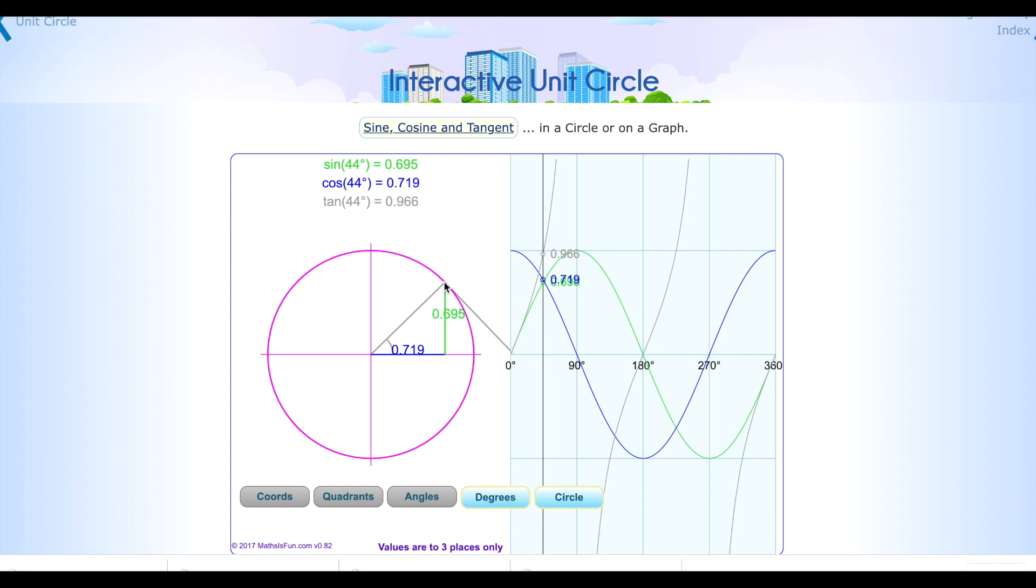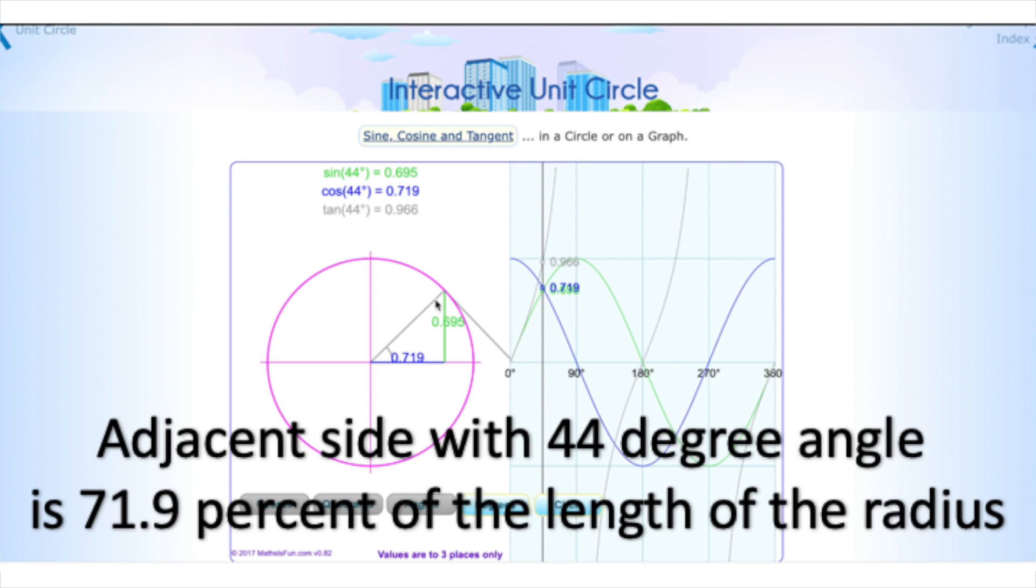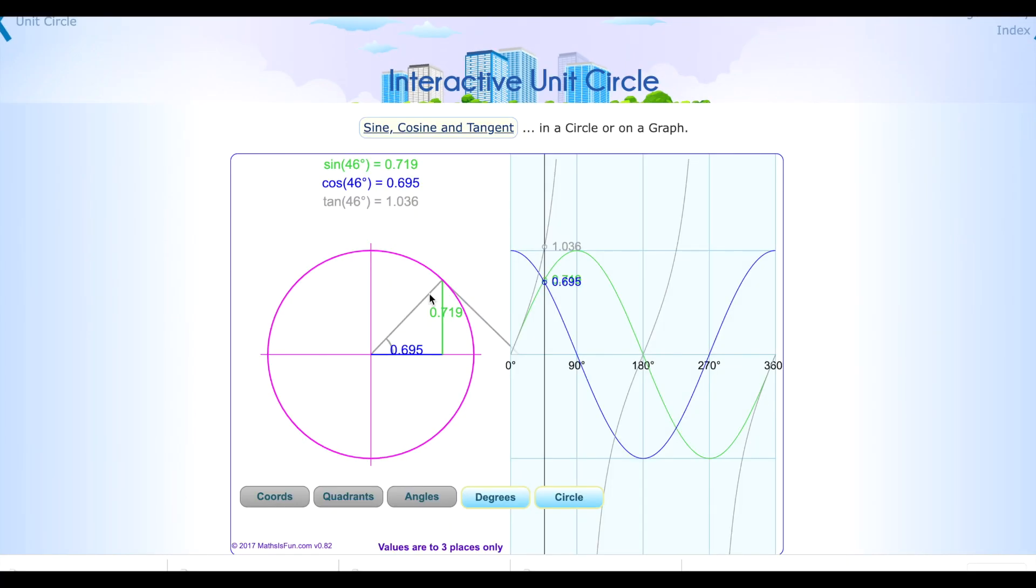So what we can ascertain from that as we stand at the moment is that if the radius is one, that the green side is 0.695 in length and the blue side is 0.719 in length. It's actually giving us a percentage if you think about it this way, so if the radius is one or 100 percent, then the green side, the opposite side, is 69.5 percent of that and the blue side or the adjacent side is 71.9 percent of that.